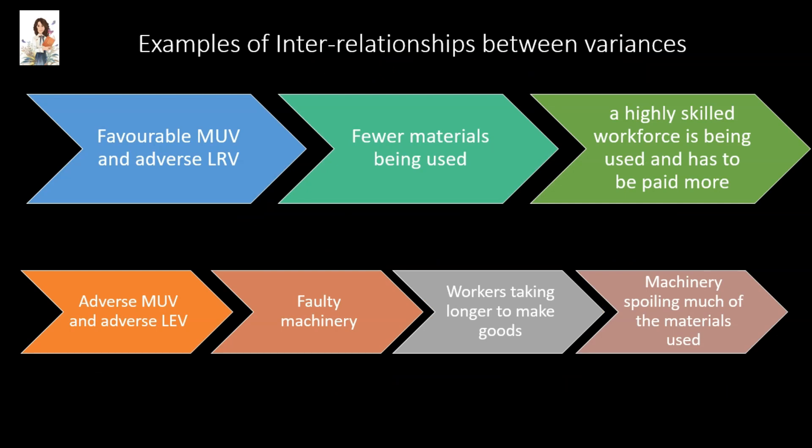Sometimes you may be asked to comment on the interrelationships between variances. For example, if you arrive at a favorable material usage variance and adverse labor rate variance, you could comment that fewer materials are being used and a highly skilled workforce is being employed and therefore has to be paid more. If you arrive at an adverse material usage variance and adverse labor efficiency variance, you could say it is due to faulty machinery, which leads to workers taking longer to make the goods and the machinery spoiling much of the materials used.